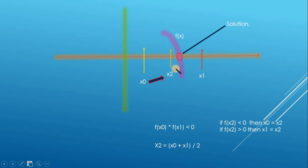Here the middle one is x2. And then we are going to see that the solution exists either in the left side of this middle point or in the right side of this point. Then we are going to just change it accordingly.